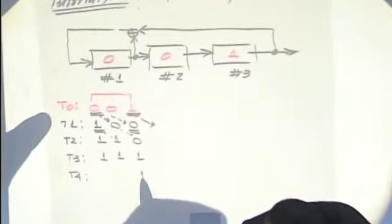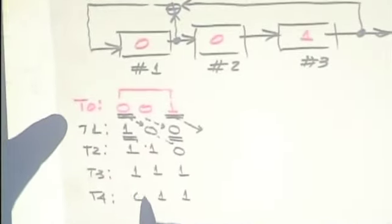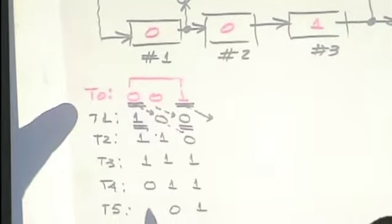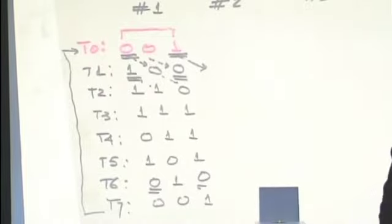T4. One. One. Zero. Very good. Five. One. Zero. One. Perfect. T6. Zero. One. Zero. Zero. And what's this? It's the beginning. It's the beginning.